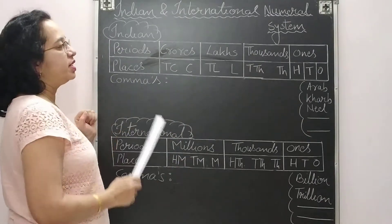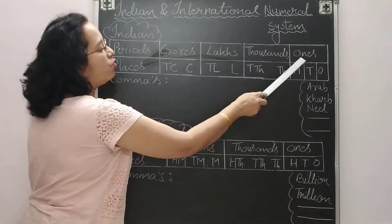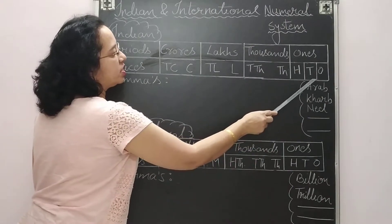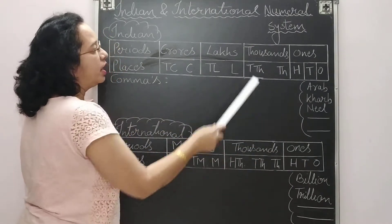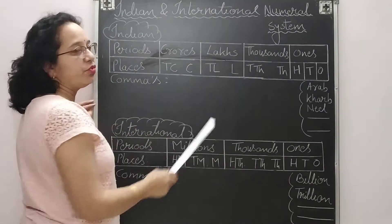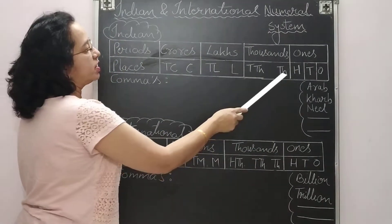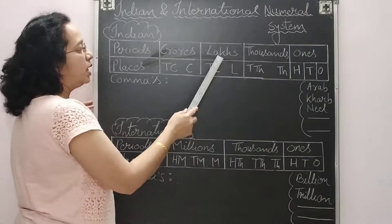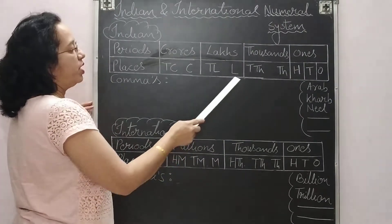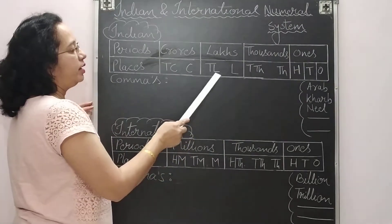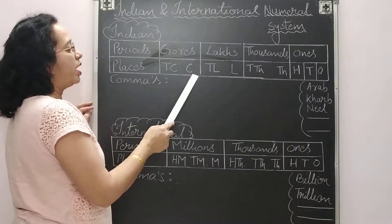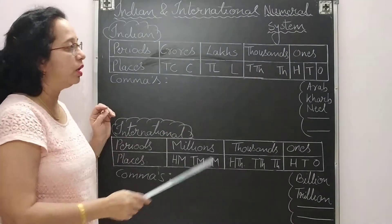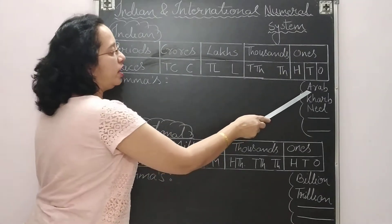Now, which places are there? In ones, we have three places: ones, tens, hundreds. In thousands, we have two places: thousands and ten thousands. In lakhs, we have lakh and ten lakhs. In crores, we have crore and ten crores.